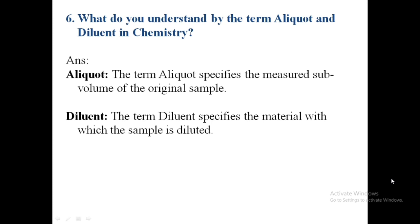Sixth question: what do you understand by the terms aliquot and diluent in chemistry? The term aliquot specifies the measured sub-volume of the original sample, and the term diluent specifies the material with which the sample is diluted.